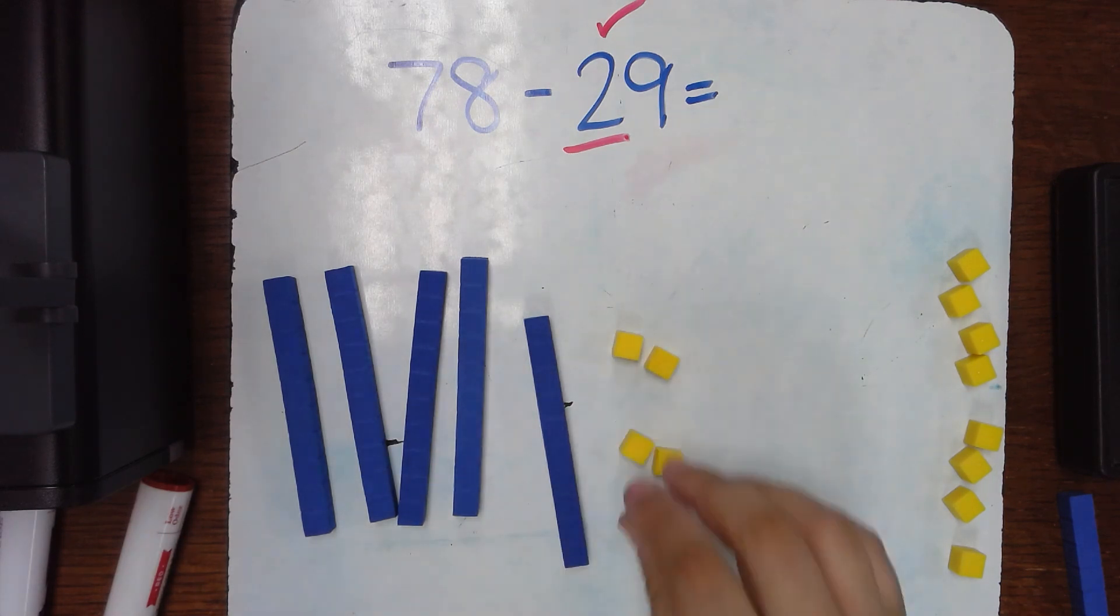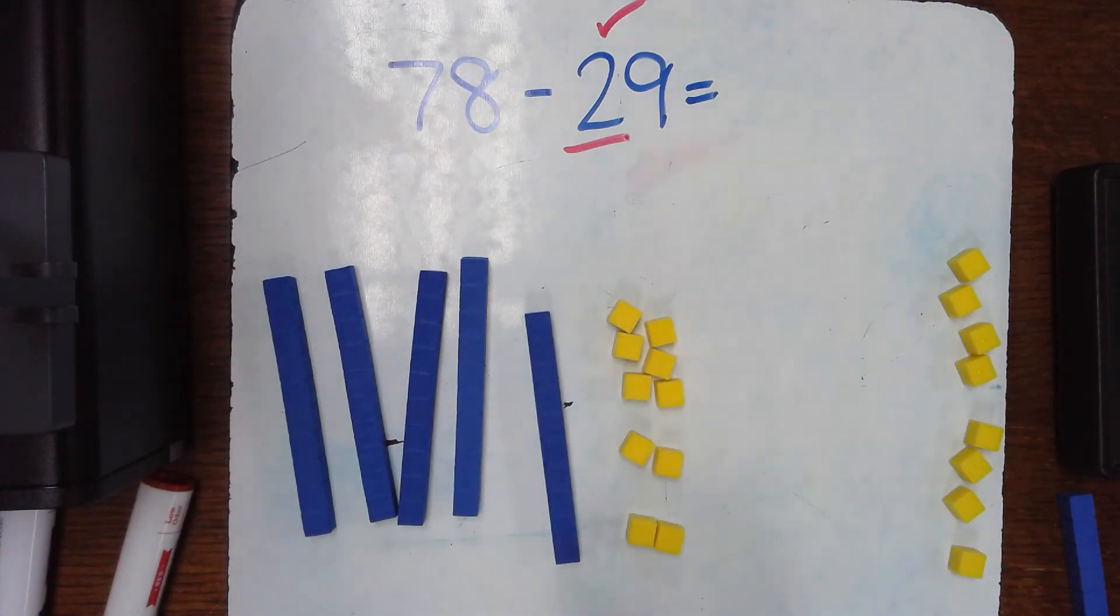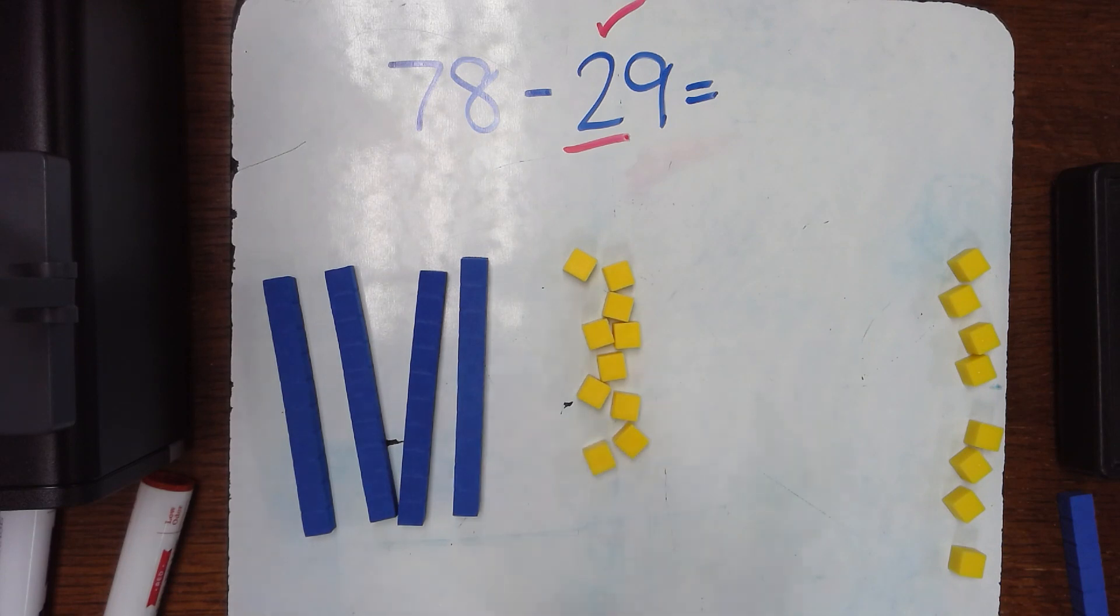So I'm going to do an exact trade. 2, 4, 6, 8, 10, and I can trade it out. So because I traded them, now I can take away one more and I've subtracted 29.